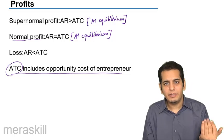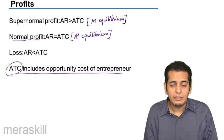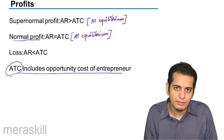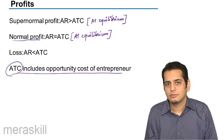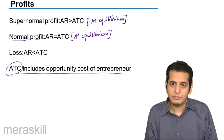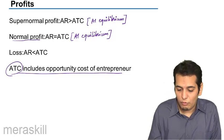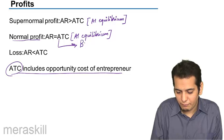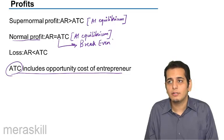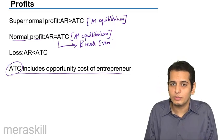So when AR is equal to ATC, the entrepreneur is effectively getting his salary, rent, interest, and wages. Thus we can say he is earning normal profit. But in economics this position is called break-even, because the economic revenue is equal to the economic cost.